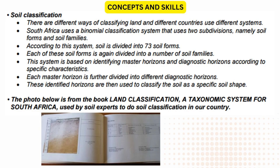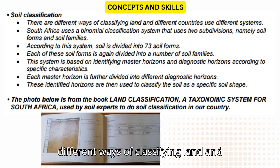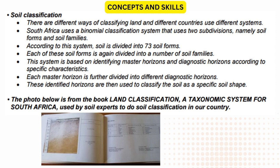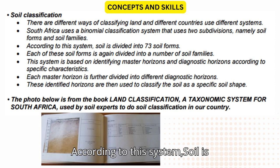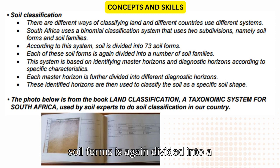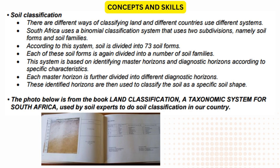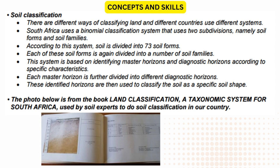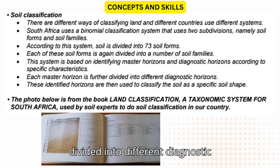There are different ways of classifying land, and different countries use different systems. South Africa uses a binomial classification system with two subdivisions: soil forms and soil families. According to this system, soil is divided into 73 soil forms, each further divided into a number of soil families. This system is based on identifying master horizons and diagnostic horizons according to specific characteristics, with each master horizon further divided into different diagnostic horizons.